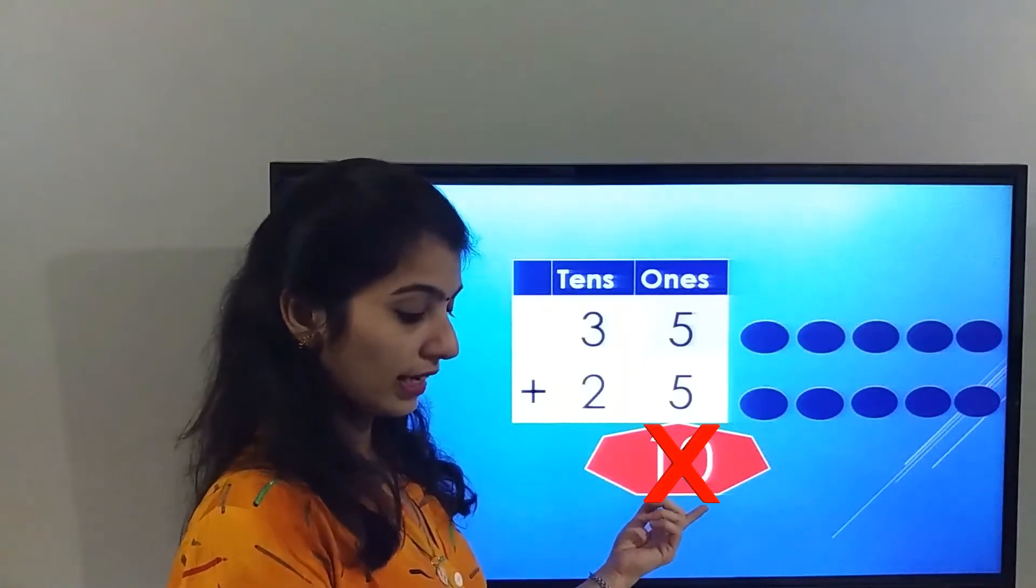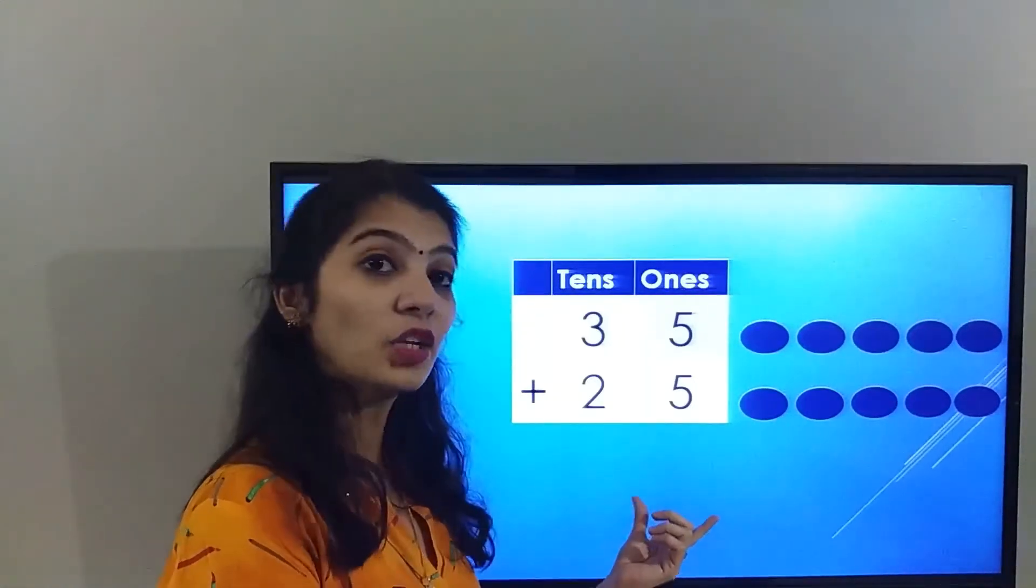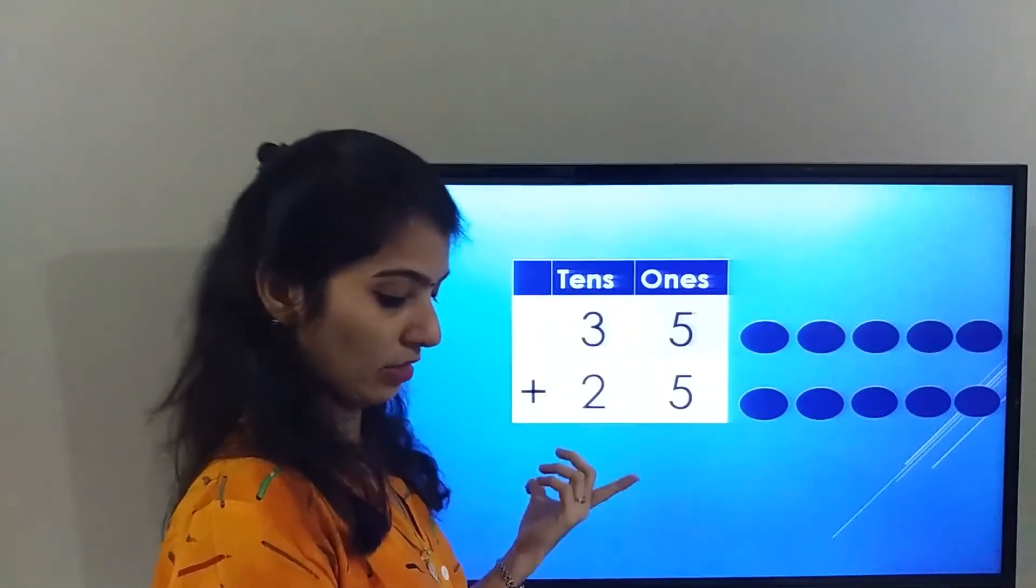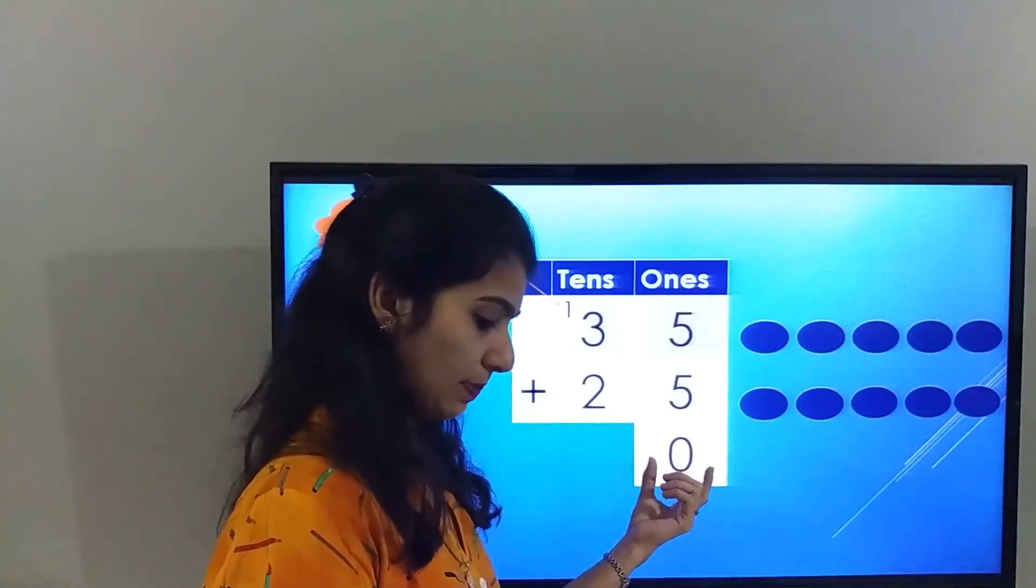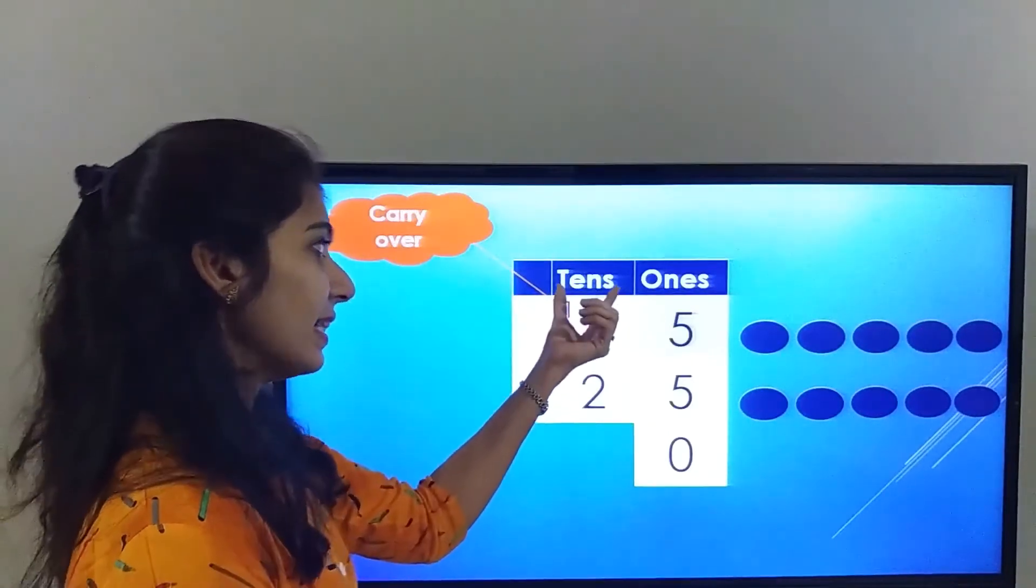Let's remove ten and use a carryover method. Write zero in the ones place and carry over one to the tens place.